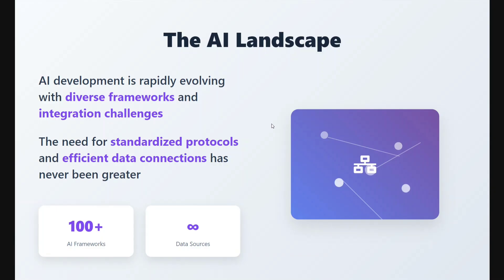The AI landscape is expanding rapidly. Multiple frameworks are coming every day. For the integration of these frameworks — for example, you have LangGraph and you have CrewAI — agents made on CrewAI might not work on LangGraph and vice versa. So you need to have standardized protocols. A protocol is a sort of rule which helps in data connections between these frameworks.